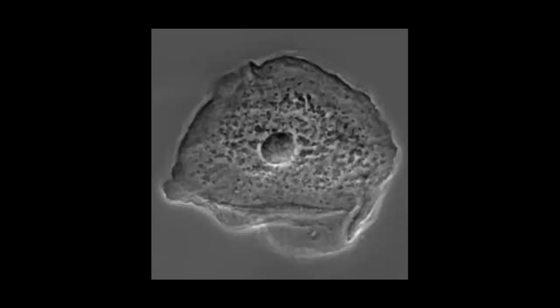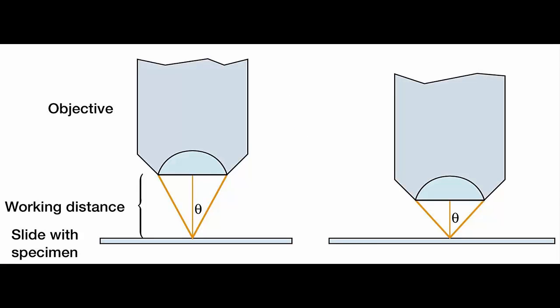Contrast: visible differences in brightness between parts of the sample. Working distance: the space between the end of the objective and the specimen.